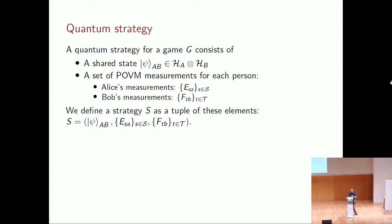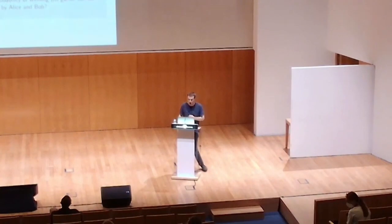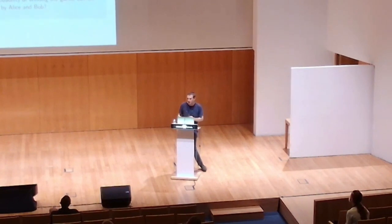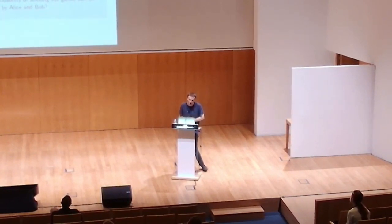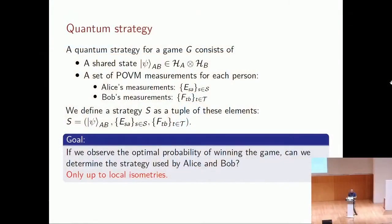The big question is: if we observe Alice and Bob achieving the optimal winning probability, can we fully determine what strategy they must have used? Sadly, the answer is no — but we can determine it up to local isometries, meaning we can get very close to identifying what Alice and Bob must have done, and use this to certify the device's inner workings and the state it prepared.